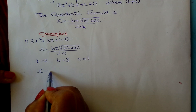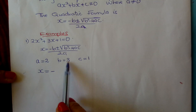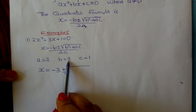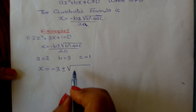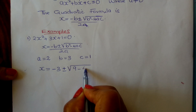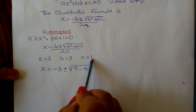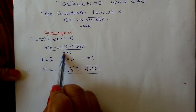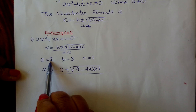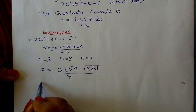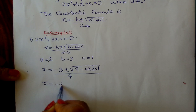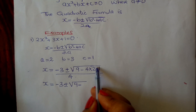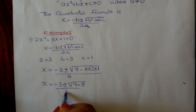So you write x equals minus b, which is minus 3, plus or minus the square root of b squared — that is 3 squared, which is 9 — minus 4 times a times c, which is 2 times 1. All these divided by 2a, which is 2 times 2, giving us 4.